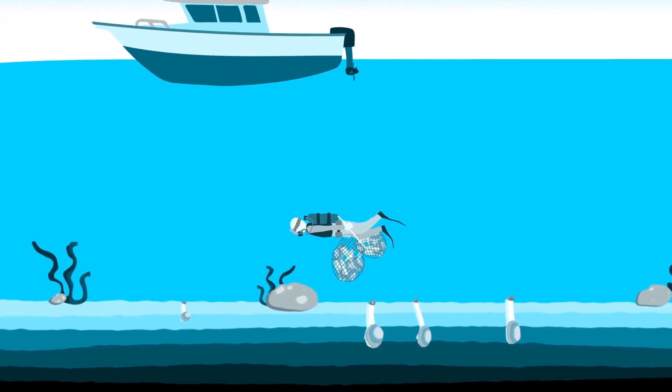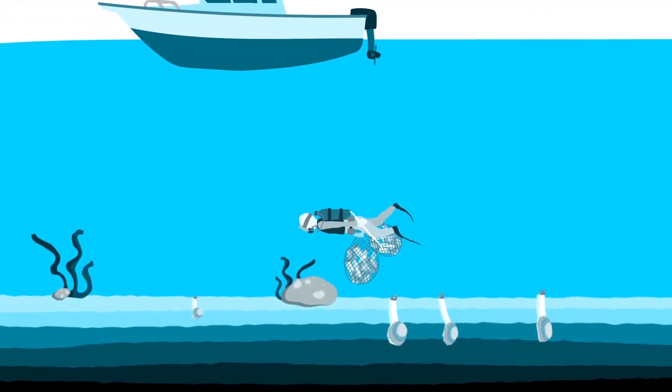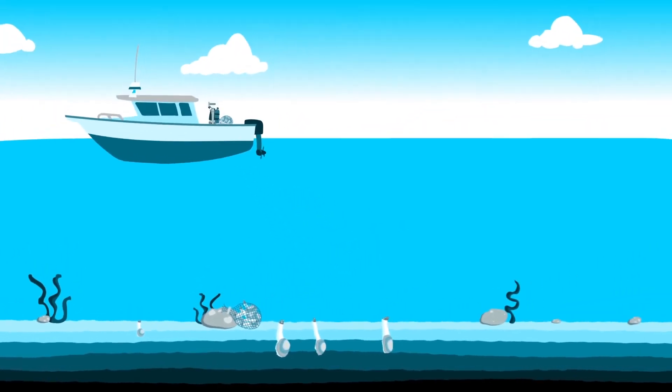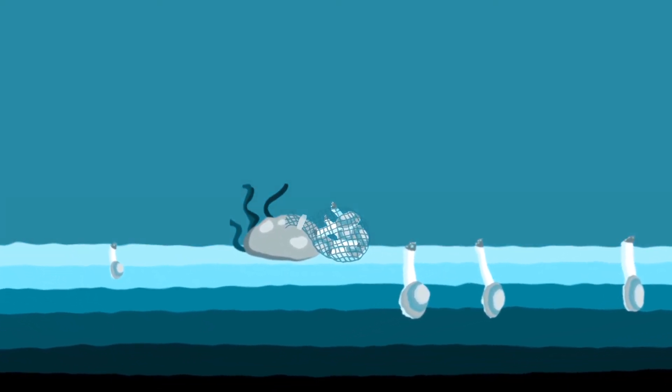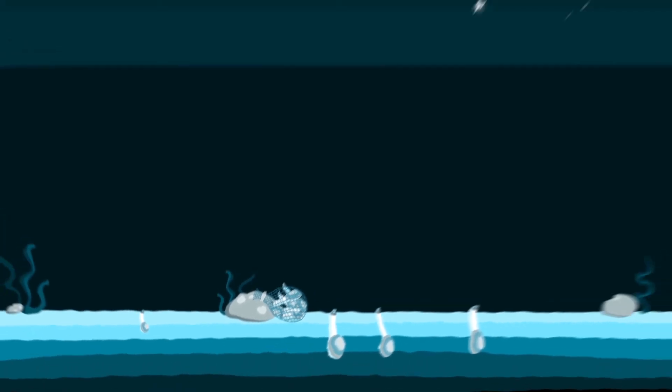But fish and wildlife managers have found that sometimes they don't. That's when the poaching takes place. The most common trick used by geoduck poachers is to dive when nobody's watching, sometimes in the middle of the night.